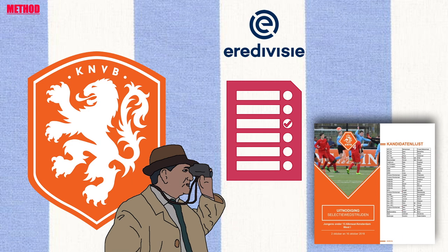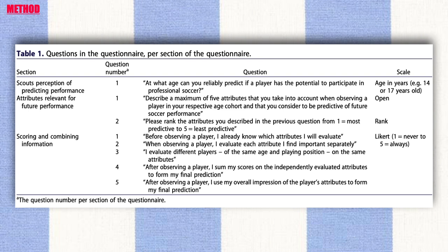Scouts were on average 58.2 years old and had 11.2 years of experience. The table presents the different questions and response scales per section of the questionnaire. In the first section, scouts were asked at what age they could reliably predict if a player has the potential to participate in professional soccer. The second section asked about information scouts take into account when predicting performance. The third section contained five statements focusing on the extent to which scouts predict performance in a structured manner.